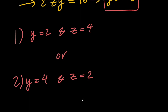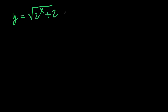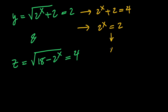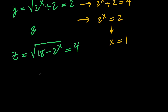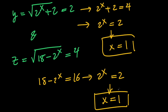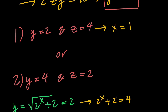Case 1: y equals 2 and z equals 4. The square root of (2 to the x plus 2) equals 2, so 2 to the x plus 2 equals 4, meaning 2 to the x equals 2, giving x equals 1. Checking with z: square root of (18 minus 2 to the x) equals 4, so 18 minus 2 to the x equals 16, meaning 2 to the x equals 2, again giving x equals 1. Both equations agree: x equals 1.